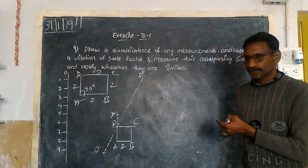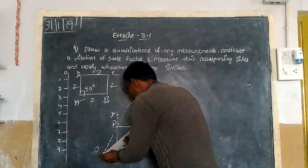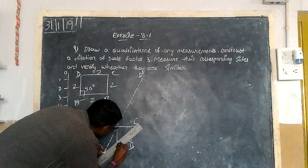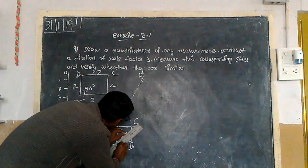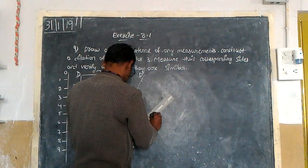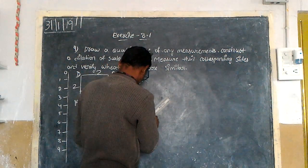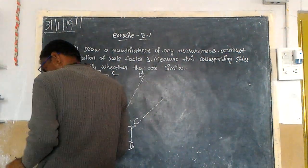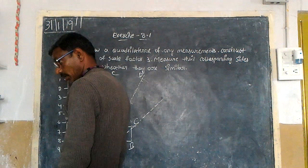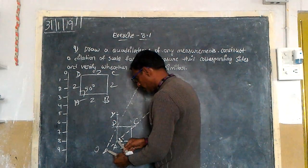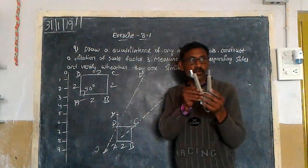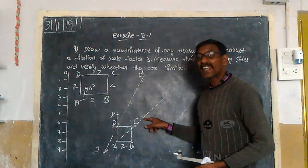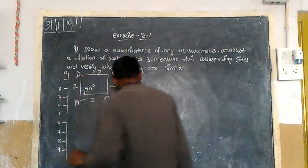This is nothing but the scale factor. Now join this — O. Take OA distance. How many times do you have to take it? Three times: one time up, two times up, three times up. Here A dash will come.